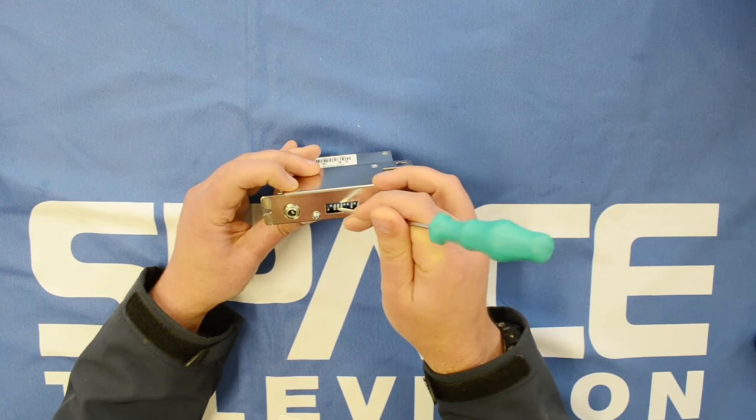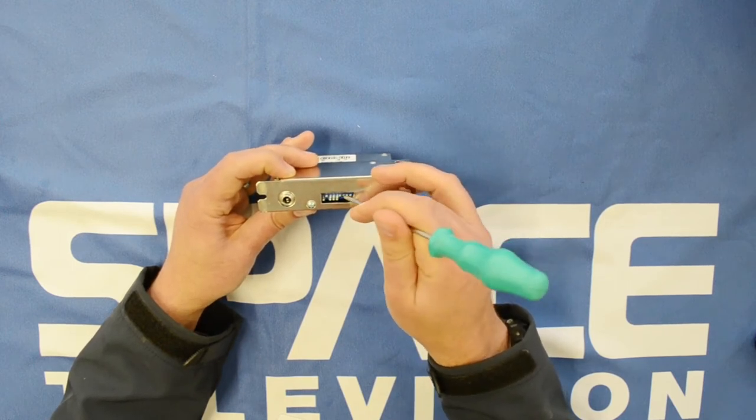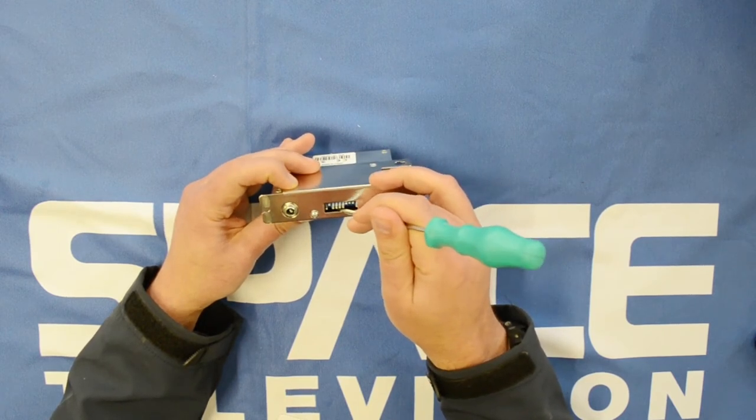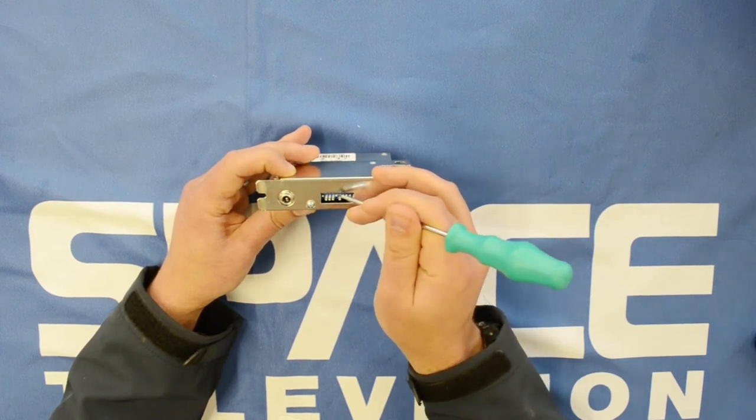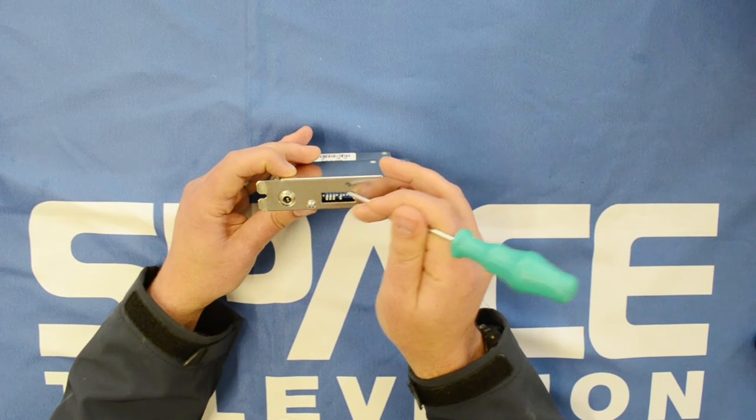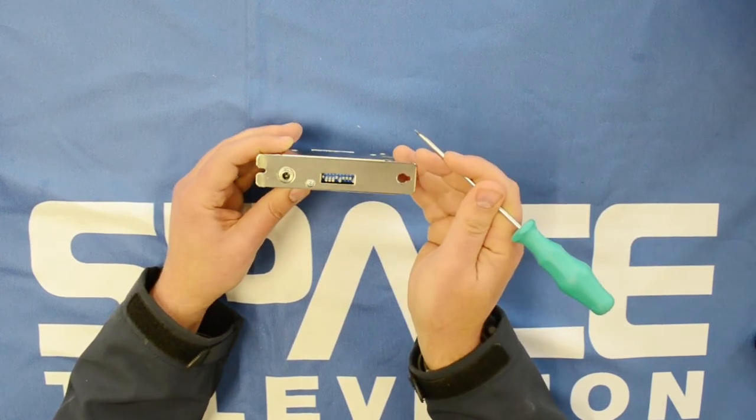Because if you select, for example, down onto S band and I select channel 21, it's going to come out on S21, not UHF 21. So that's where a lot of technicians get confused.